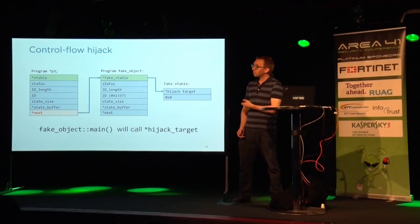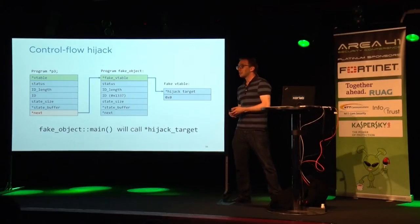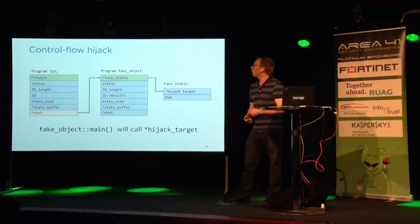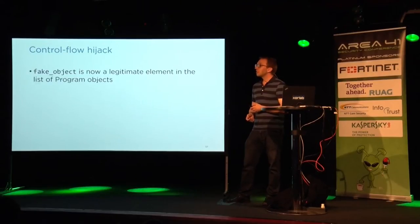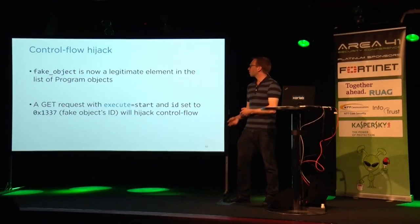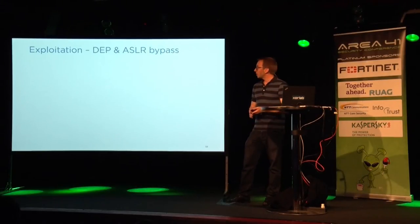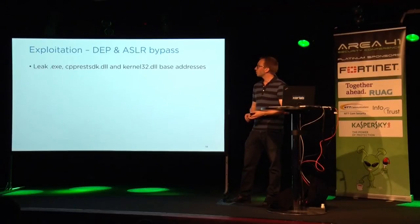When we update the next pointer, we can insert this fake object into the list of program objects. Hijacking control flow is just calling the virtual method of this fake object — triggered by a specific HTTP request in this example. But we still need to bypass DEP and ASLR, which requires the following steps: leak base addresses of libraries we want to use, deliver shellcode, deliver the ROP chain, hijack control flow to our first ROP gadget, do stack pivoting, and then our ROP chain calls VirtualProtect and marks the payload executable, then returns to our shellcode.